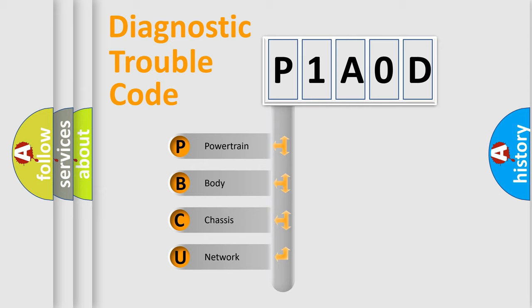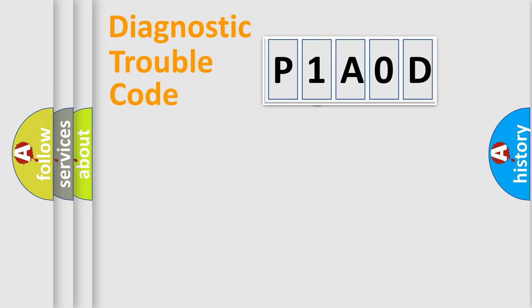We divide the electric system of automobile into four basic units: Powertrain, Body, Chassis, and Network. This distribution is defined in the first character code.